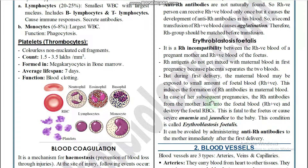In response to first delivery exposure, the mother produces RH antibodies. In subsequent pregnancies, these maternal RH antibodies enter the fetal blood and destroy fetal RBCs, causing severe anemia and jaundice. This condition is called erythroblastosis fetalis. It can be avoided by administering anti-RH antibodies to the mother at the time of the first delivery.